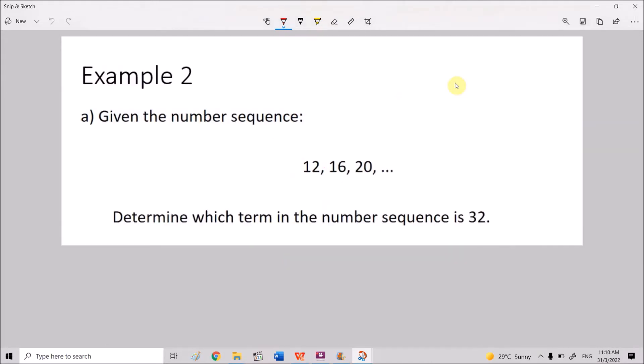For this example, you are given the number sequence. We need to determine which term in this sequence is 32. Meaning that if we extend the sequence, if we extend it by writing all these numbers, 32 is one of the numbers. And we want to determine the position. Where is the number 32? Hence, we start off by determining the pattern. So 12 plus 4 is 16, 16 plus 4 is 20. Hence, adding 4 is the pattern. 20 plus 4 is 24, 24 plus 4 is 28, 28 plus 4 is 32, which is this number. Hence, we just stop here. Then we count. 1, 2, 3, 4, 5, 6. Meaning that 32 is the sixth term. You can write T6 equals to 32, or you can write 32 is the sixth term.